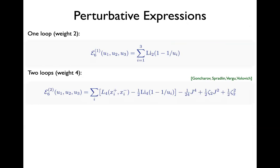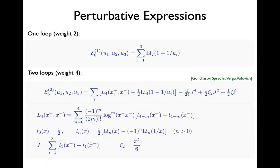Let me give examples. At six points and one loop, I have three variables (3N−15 = 3 for N=6). The answer is given by a simple expression involving dilogarithms, Li₂ functions. At two loops, I see things involving Li₄, and this L₄ function involves Li₄ functions, logarithms, and so on, such that the total degree of the whole expression is four. Everything at two loops is some weight-four combination of logs and polylogs.